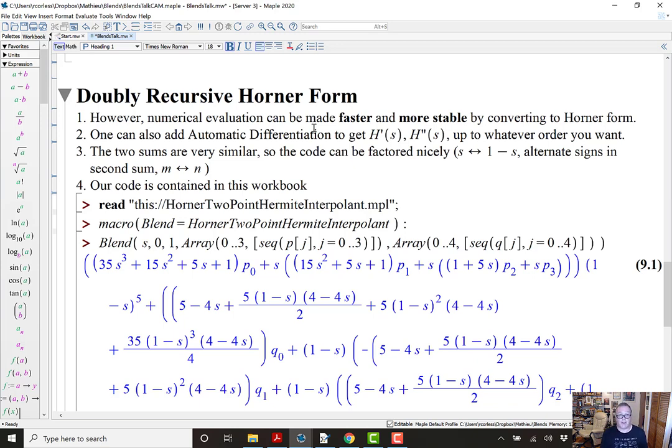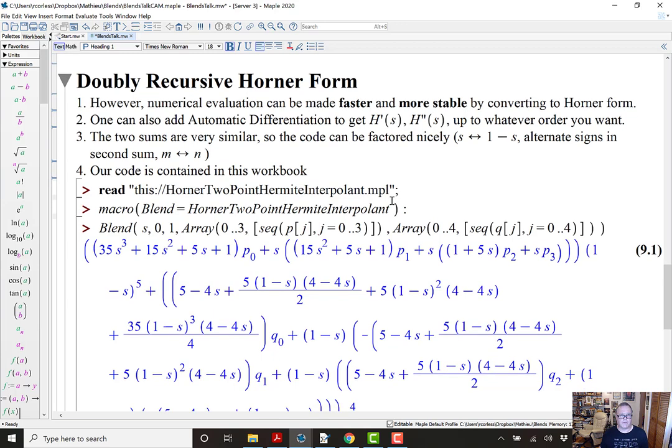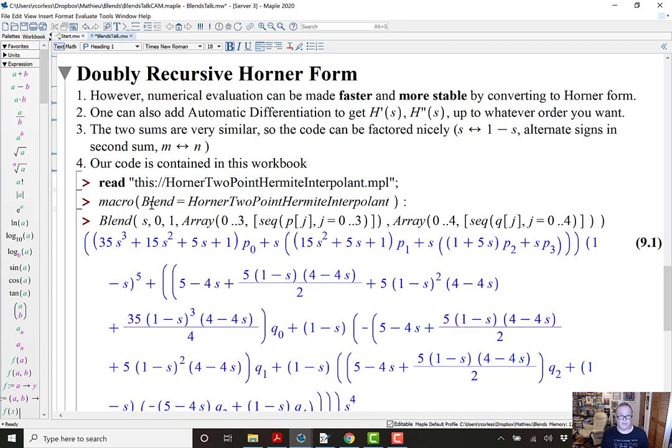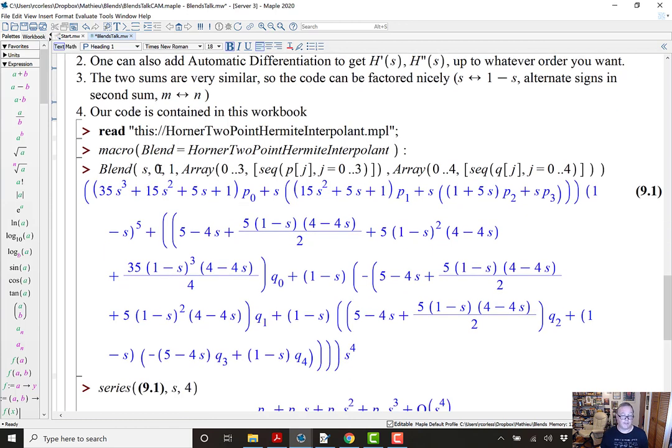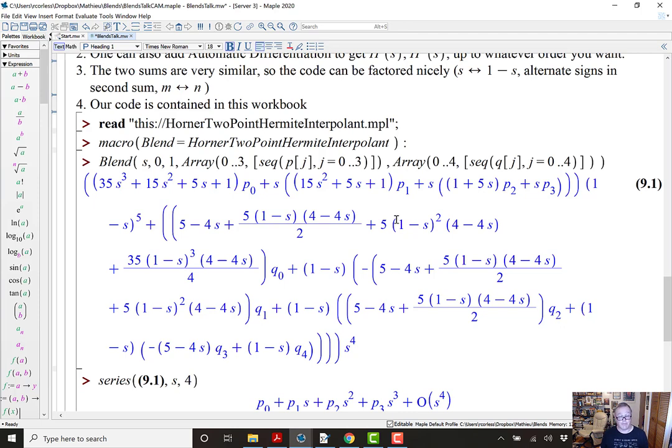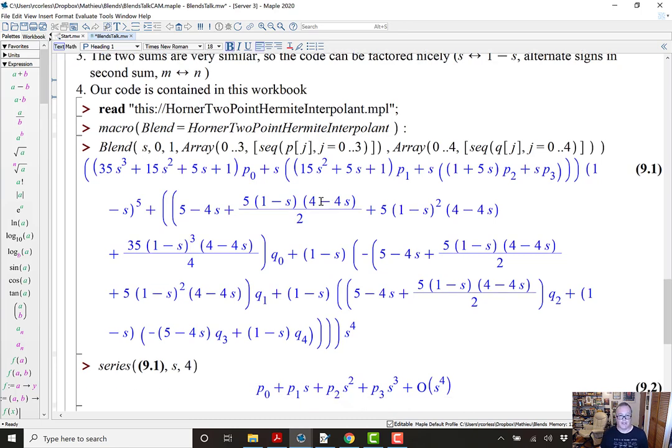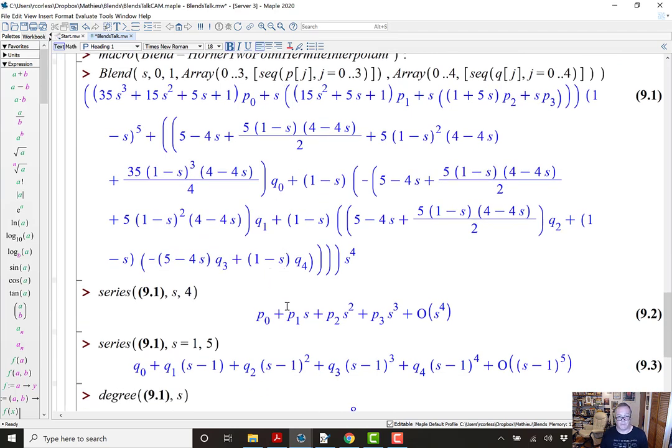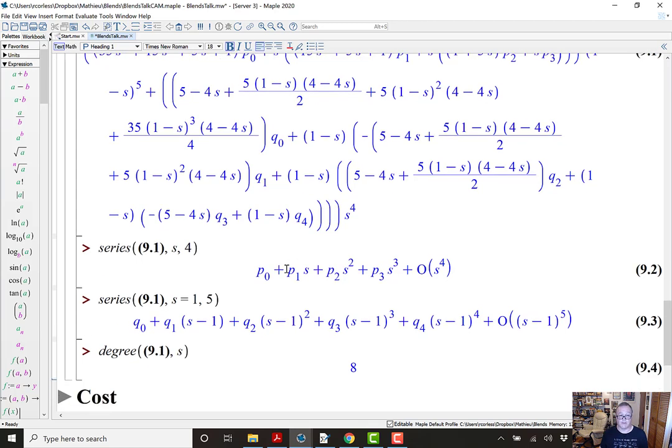Those binomial coefficients will cause problems unless you are careful. And, it turns out that to be careful, all you need to do is convert to Horner form. I'll talk about automatic differentiation in a minute. And, there are other interesting things that you can take advantage of from the formula that you can factor the code nicely. And, our code is contained in the workbook. So, if we read it in, and the code is called HornerTwoPointHermiteInterpolant, which is a mouthful. So, I'd much rather type blend. So, we use a macro for blend. So, if I say blend s from the interval zero to one, and I give symbolic p's and symbolic q's, I get what should be the same polynomial as what we just looked at in the previous example. It looks different. In particular, it looks like it has rational coefficients, 5 over 2 here, etc. But, there's a factor 4 in there, so things can cancel. In general, I don't know how to write a blend in an integer way. But, this is not for symbols. It's for numbers. And, if you do it with numbers, well, then rational numbers are not going to give us any trouble at all. So, just to show you that the code that we wrote gives the same answer as before. We get the correct series at the left and the right, and it's the correct degree.